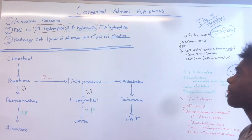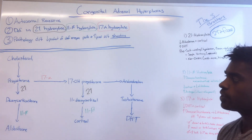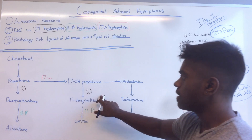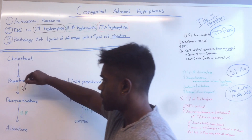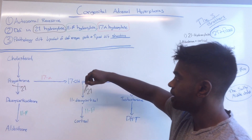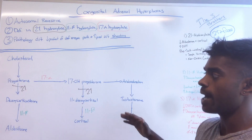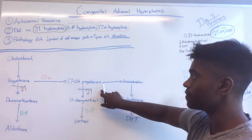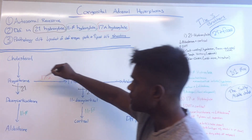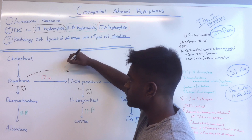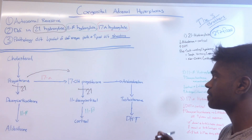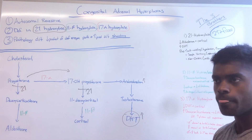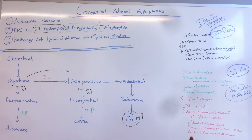Let's first talk about 21-hydroxylase. Looking through the pathway, it's involved in only two of these paths. So if we're deficient in it, we're going to block this pathway and this pathway. I like to think about it like a map — we're going to have a detour here because of construction, another detour here, so now you're forced to go this way. As a result, the pathway is going to be shunted in this direction, causing an increase in androgens and also an increase in DHT.